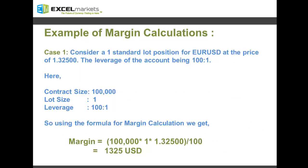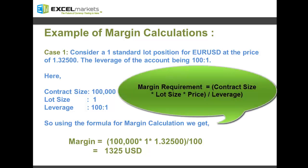Let's consider examples for margin calculations to see how these two factors affect the calculations. In case one, we open a one standard lot position for Euro/Dollar at a price of 1.32500, with account leverage of 100:1. Here the contract size is 100,000, lot size is 1, and leverage is 100. Putting these values in the formula, margin equals 100,000 times 1 times 1.32500, divided by 100, which comes out to be 1,325 US dollars.